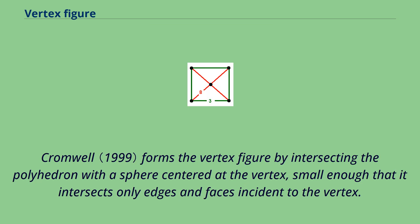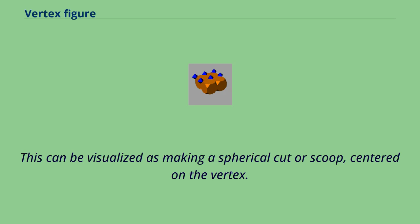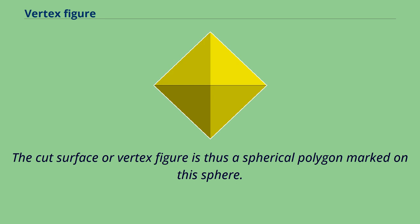Cromwell forms the vertex figure by intersecting the polyhedron with a sphere centered at the vertex, small enough that it intersects only edges and faces incident to the vertex. This can be visualized as making a spherical cut or scoop, centered on the vertex.